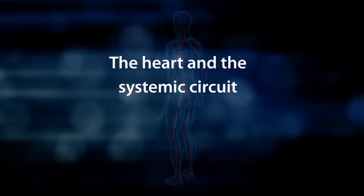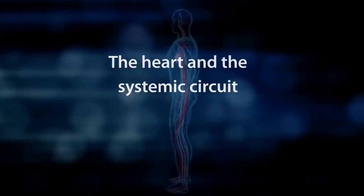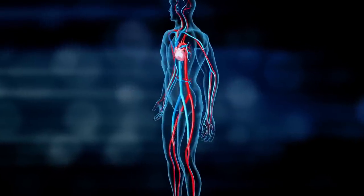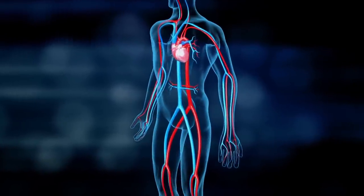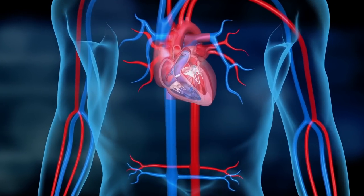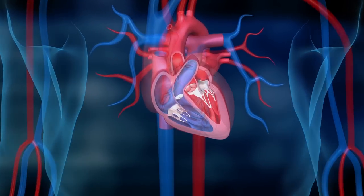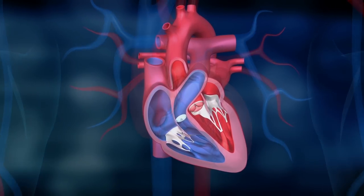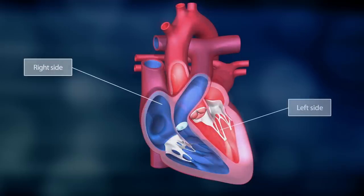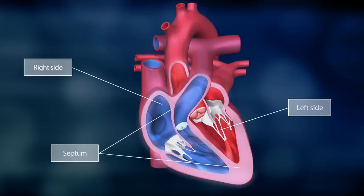The heart is a muscle that pumps blood into the entire body through rhythmic contractions, supplying all organs with sufficient oxygen and other necessary substances. The heart is divided into a right and a left side, and the two sides are separated by the septum.